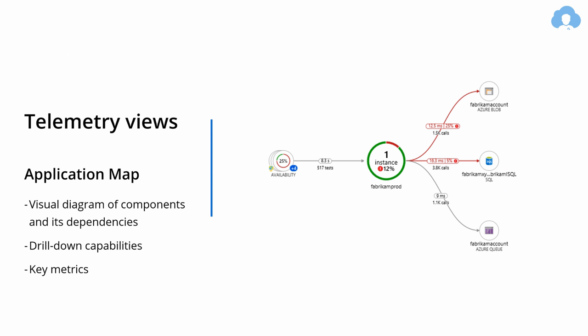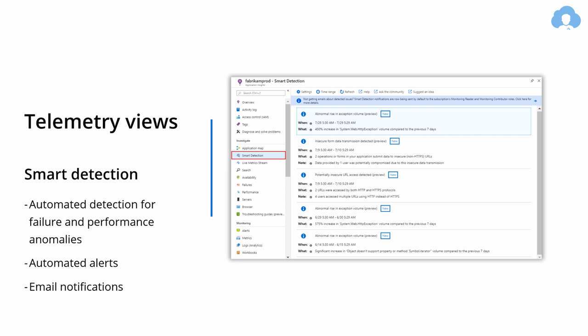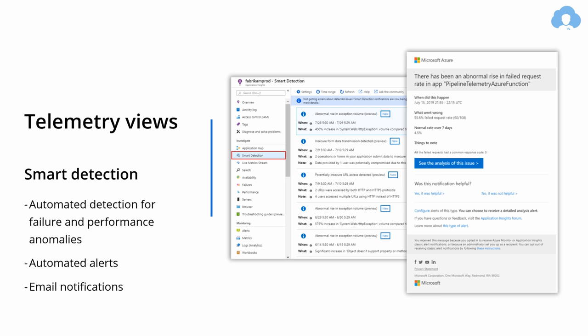Once you gather the metrics, there are multiple views you can use to view the data. Application Map is a cool feature that creates a visual diagram of your application based on the logs themselves — it's neat that it allows you to visualize how your application is working solely based on those logs. Another view is Smart Detection, which provides automated log detection for failure and performance anomalies. If something happened overnight, you'll see those events grouped by category and get an automated email alert so you can quickly react.